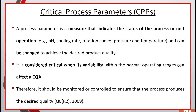Let's look in detail at critical process parameters and critical material attributes. A critical process parameter is a category of risk factor associated with manufacturing variables. A process parameter is a measure that indicates the status of the process or unit operation, and it can be changed to achieve desired product quality. Examples of process parameters include pH, cooling rate, drying rate, rotation speed, pressure, and temperature.